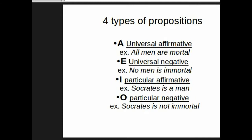A proposition A, which is defined as universal affirmative. For example, all men are mortal. The E proposition, universal negative. For example, no man is immortal. I, particular affirmative. O, particular negative.